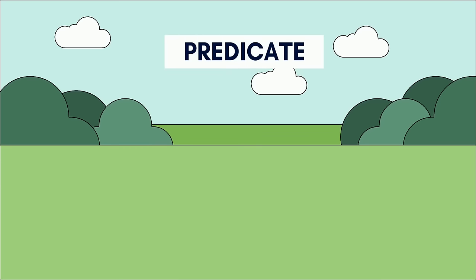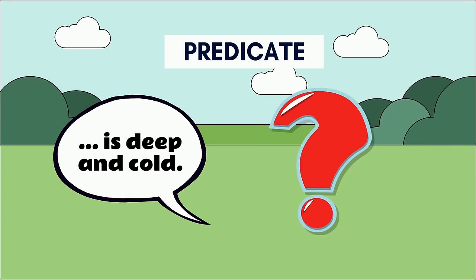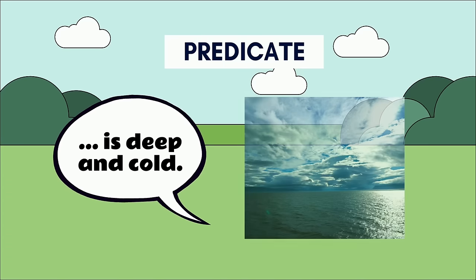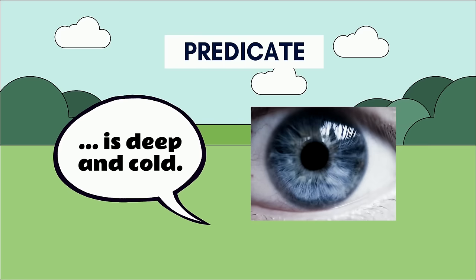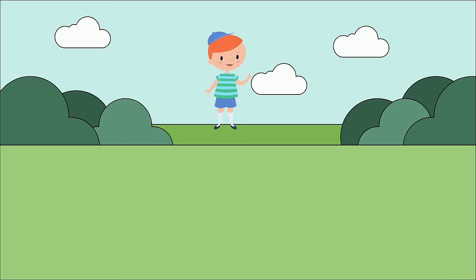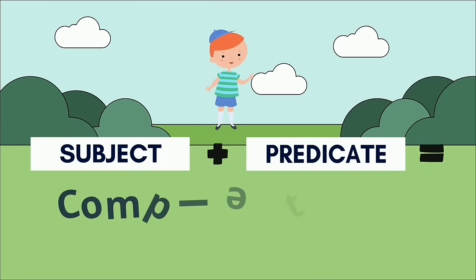Similarly, if you have just a predicate — for example, is deep and cold — you would have no idea who or what is deep and cold. Was the ocean deep and cold? Was the evil witch's lair deep and cold? Do you see what I'm trying to show you? You need both the subject and the predicate to make a complete sentence.